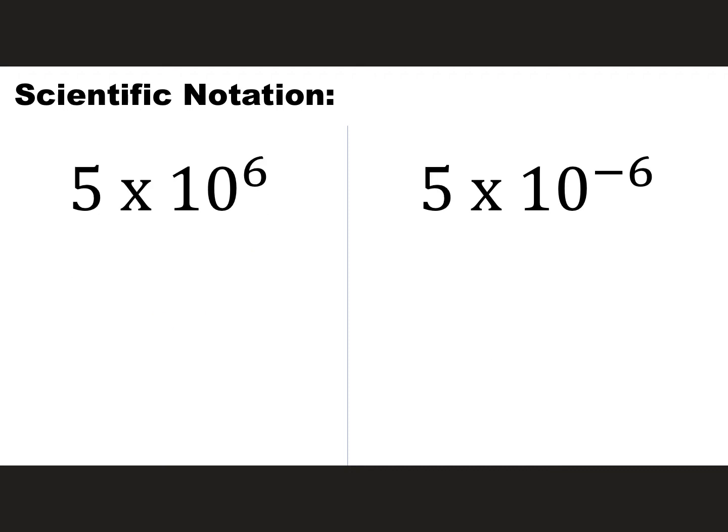Sometimes people freak out when they don't see a decimal. Well, the decimal is at the end of the number, just like a period would be at the end of a sentence. So for this one, you have your 5 and the decimal is right here. And then you just move it six times. One, two, three, four, five, six. Put zeros in all those spots. And I believe that number ends up being five million.